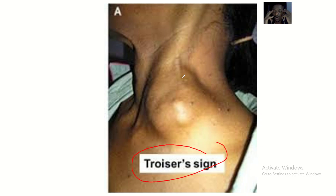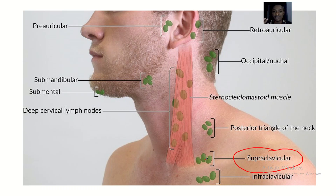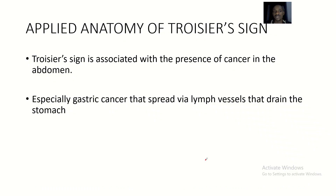That's the anatomy — what we see. When we talk about the applied anatomy, we need to understand what actually causes this enlargement or swelling. Looking at the supraclavicular lymph nodes, you can see they are located just above the clavicle — right where the neck starts. Now, what actually causes the Troisier's sign?